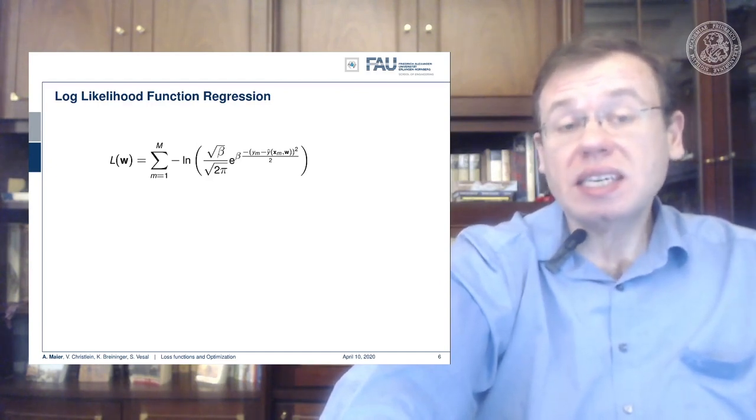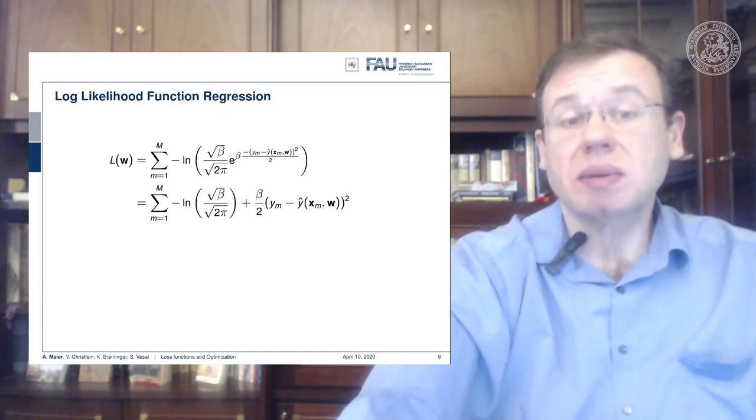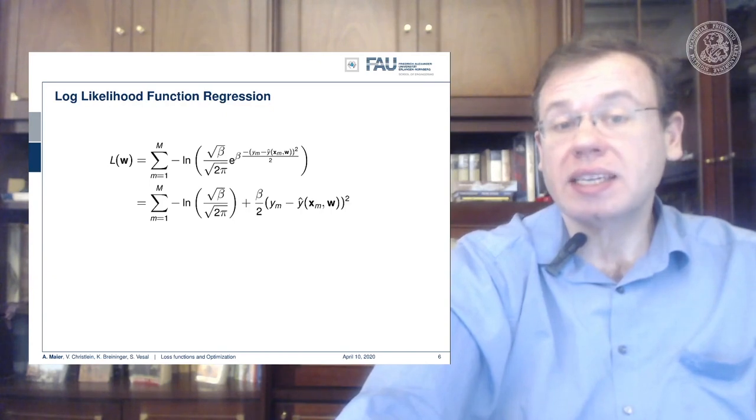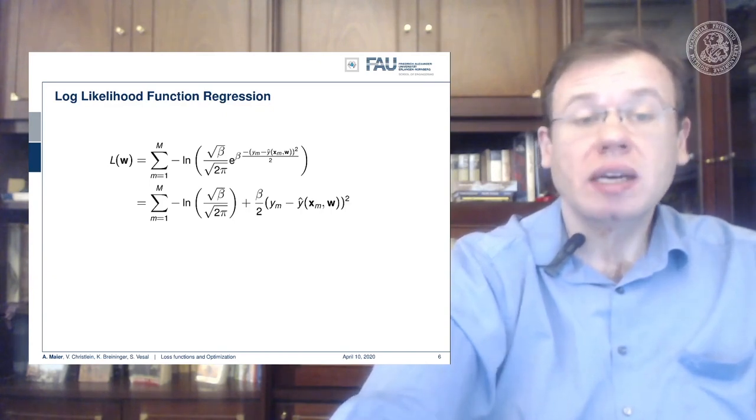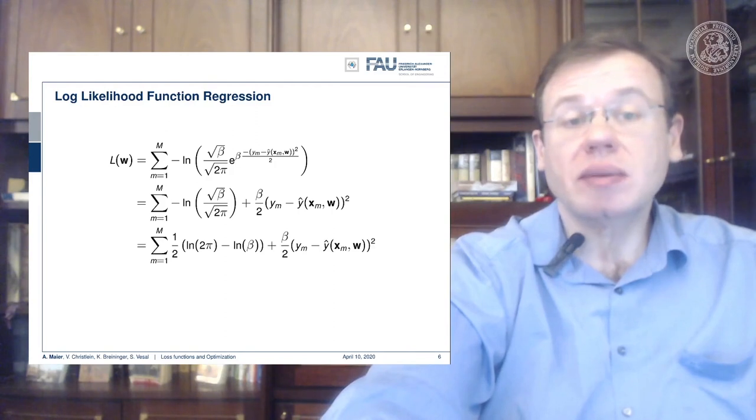If we do so, you will see that we can use the logarithm. It comes very handy because it allows us to split the product here. We also see that the logarithm cancels out the exponential function, and then we simply get this: beta over 2 times (ym minus ŷm) to the power of 2. We can simplify the first term further.